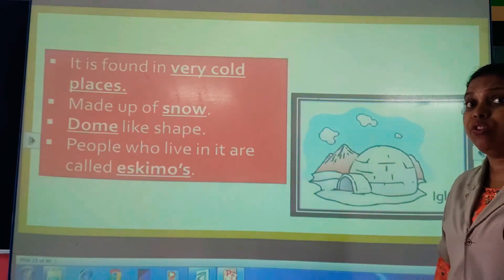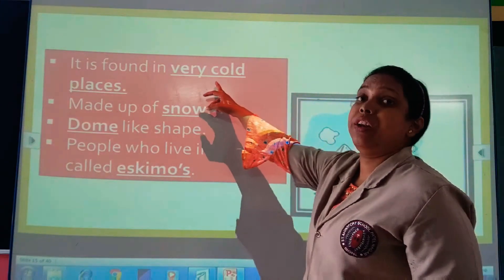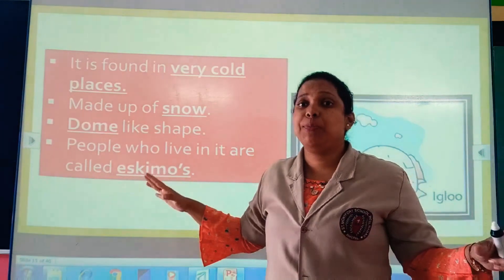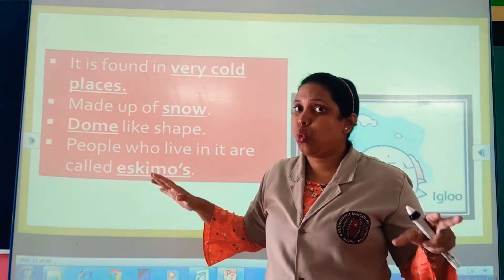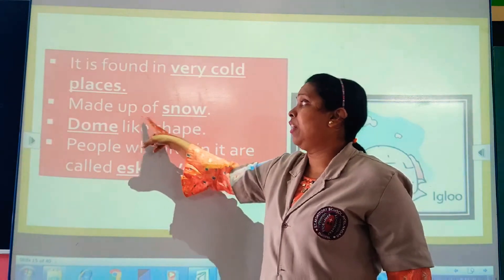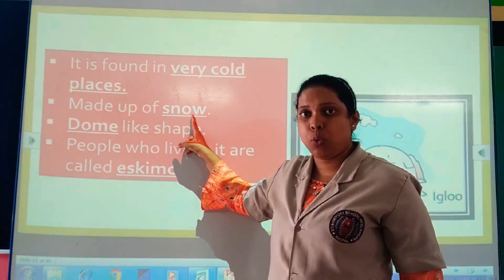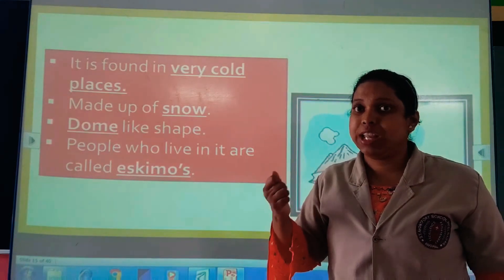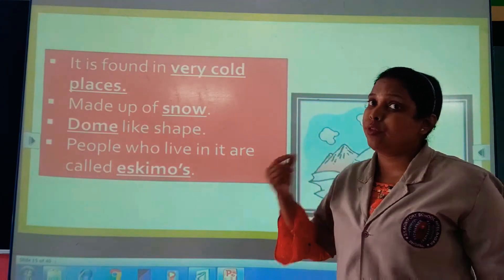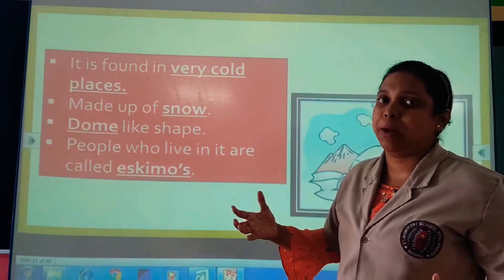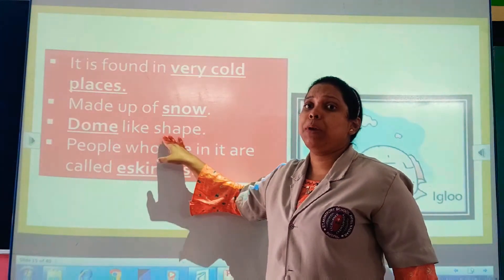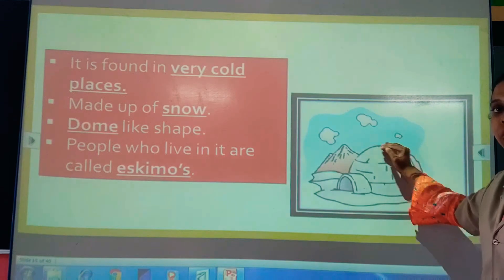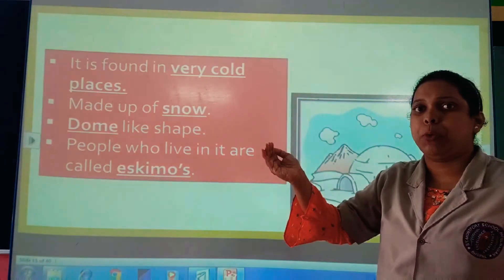These types of houses are found in very, very cold places — where everywhere you can see ice or snow. There you will find an igloo. It is made up of snow and has a dome-like shape. A dome means a semi-circular shape on top.